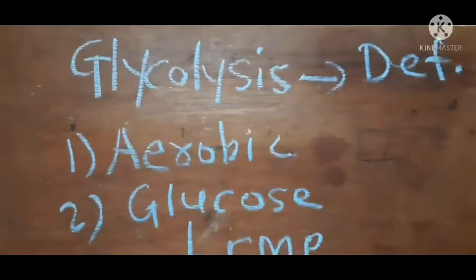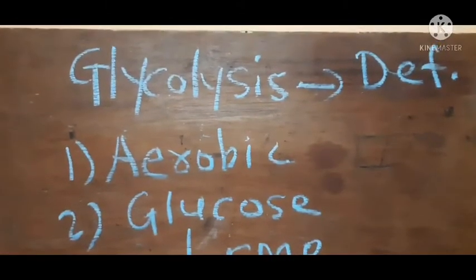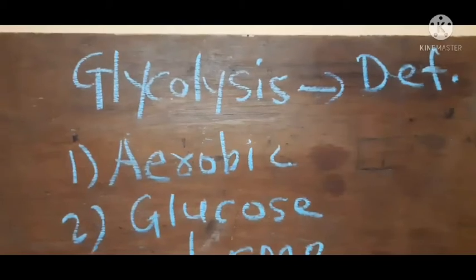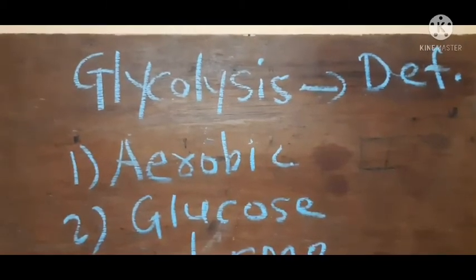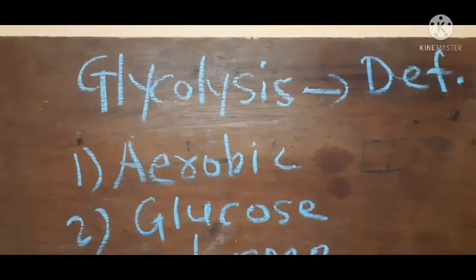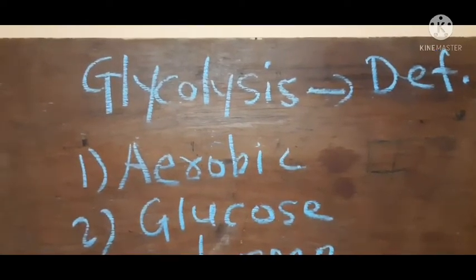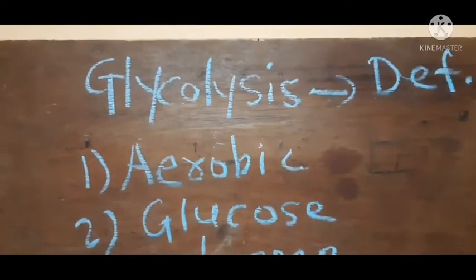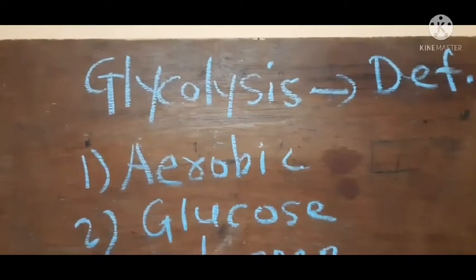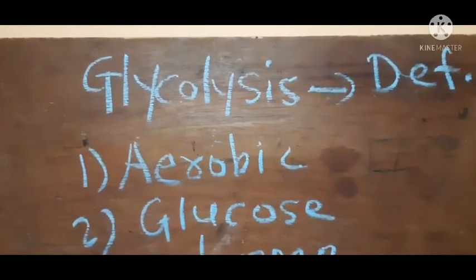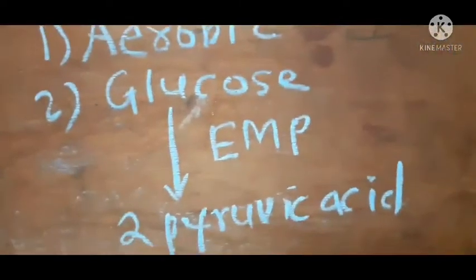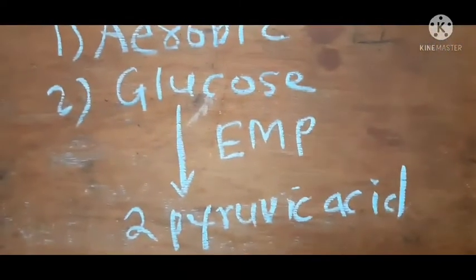Glycolysis - the name itself indicates the process. Glyco means glucose, lysis means to break. The first point you can define: glycolysis is an aerobic process in which glucose is degraded into two molecules of pyruvic acid.